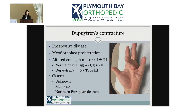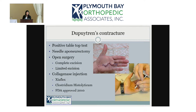Type 3 collagen is more like scar collagen. The cause is largely unknown but there is a genetic component — we see it mostly in people of Northern European descent, and it affects men more than women.